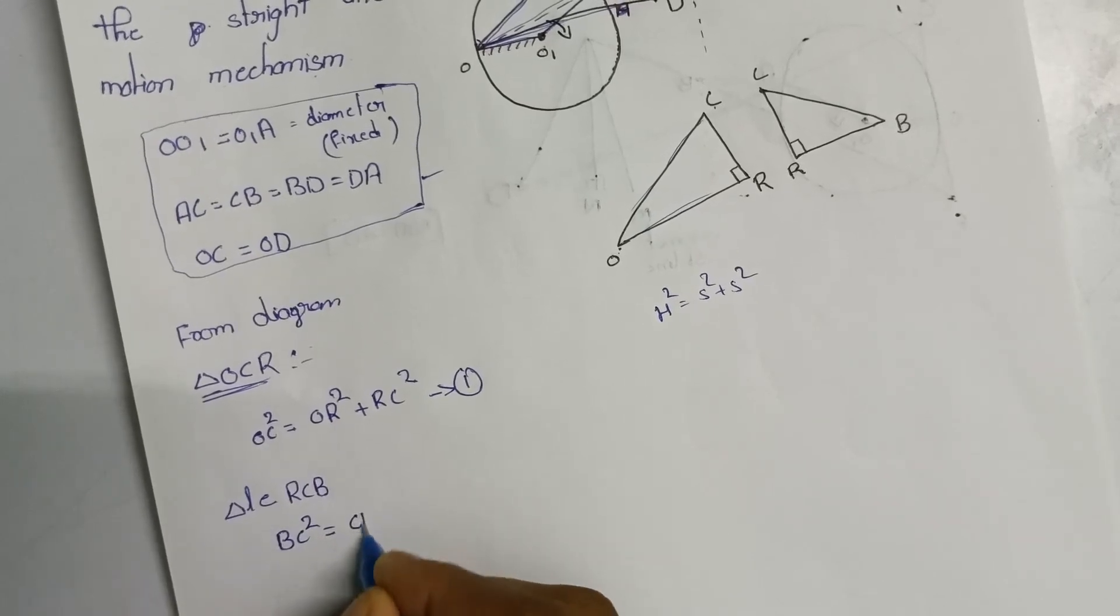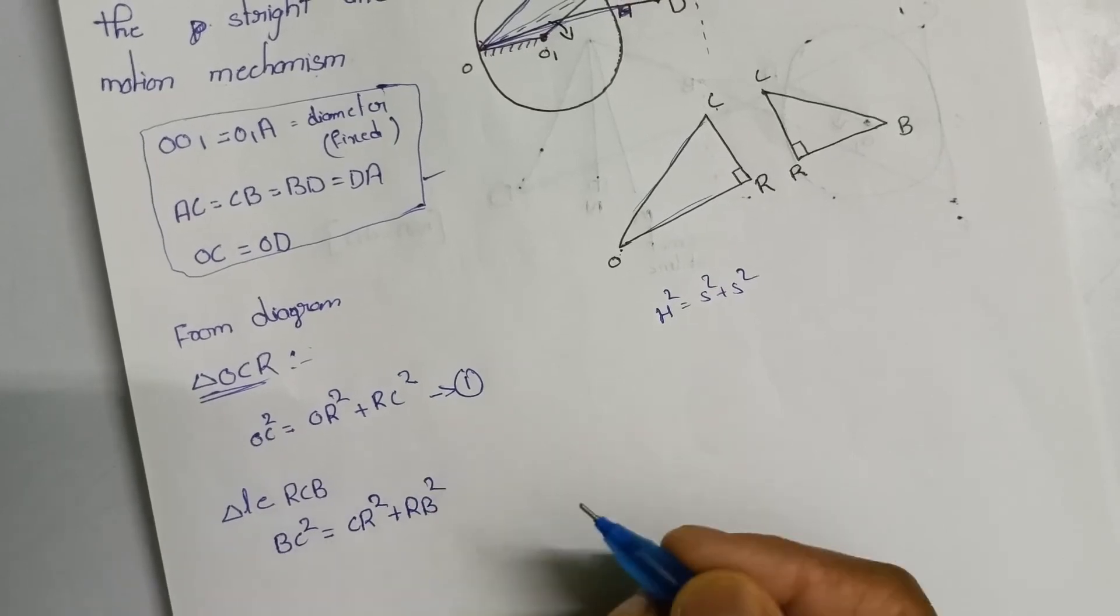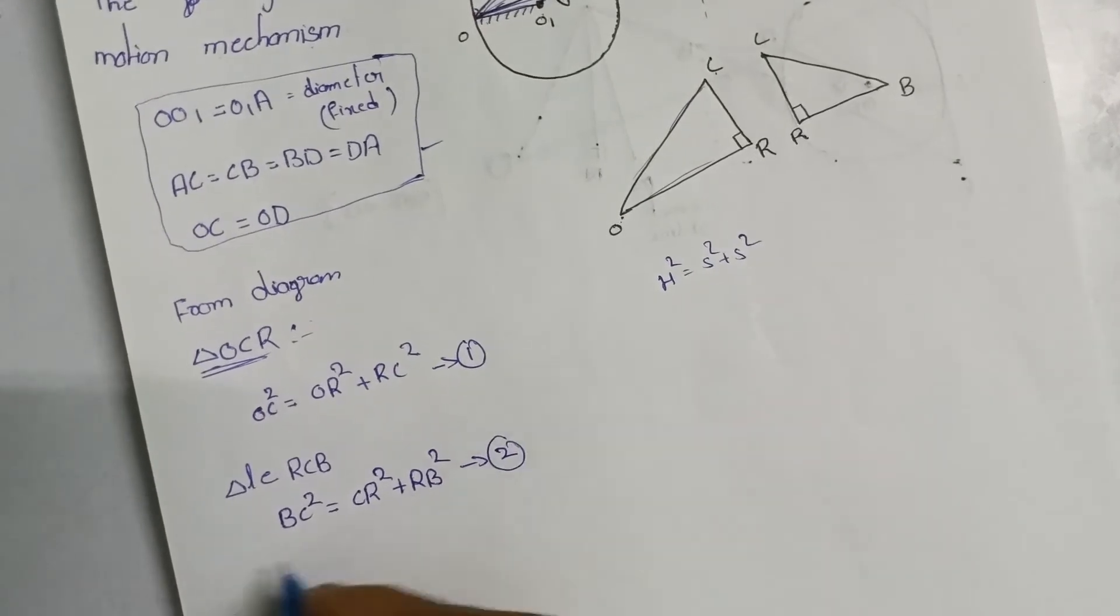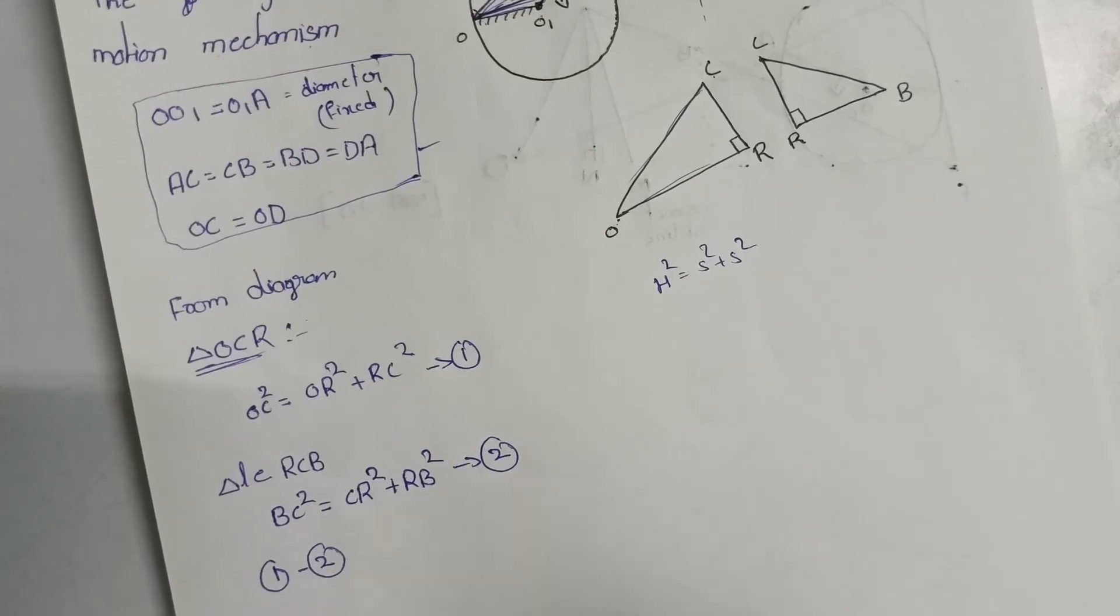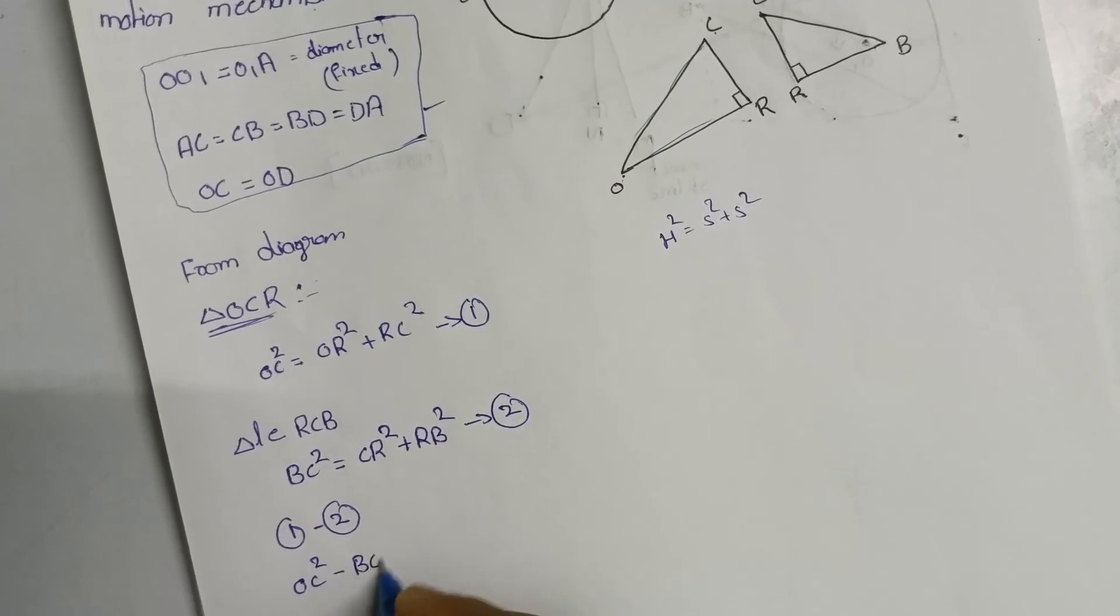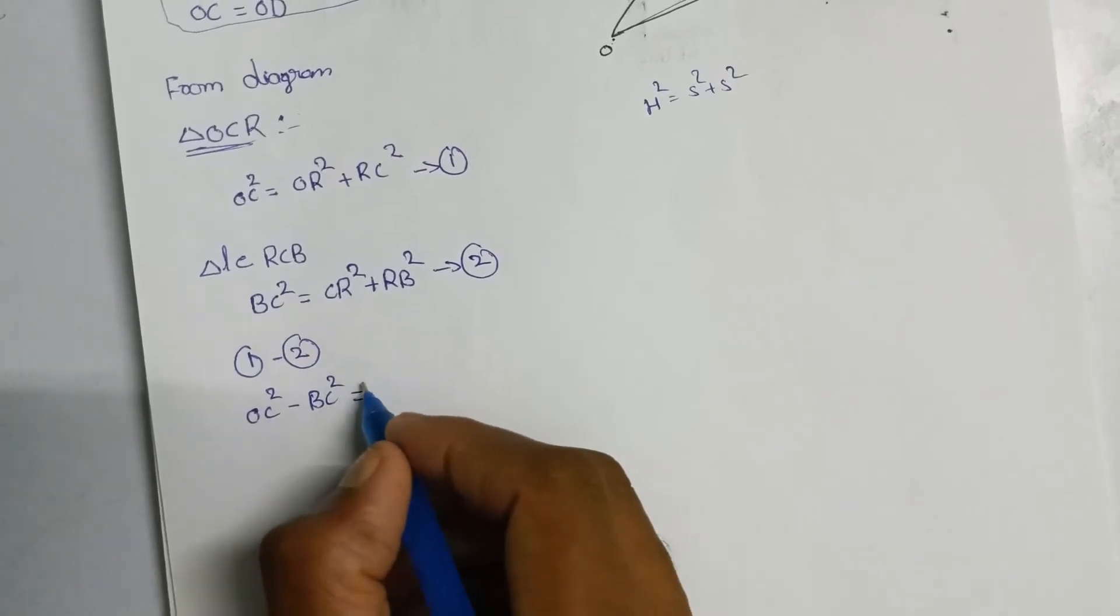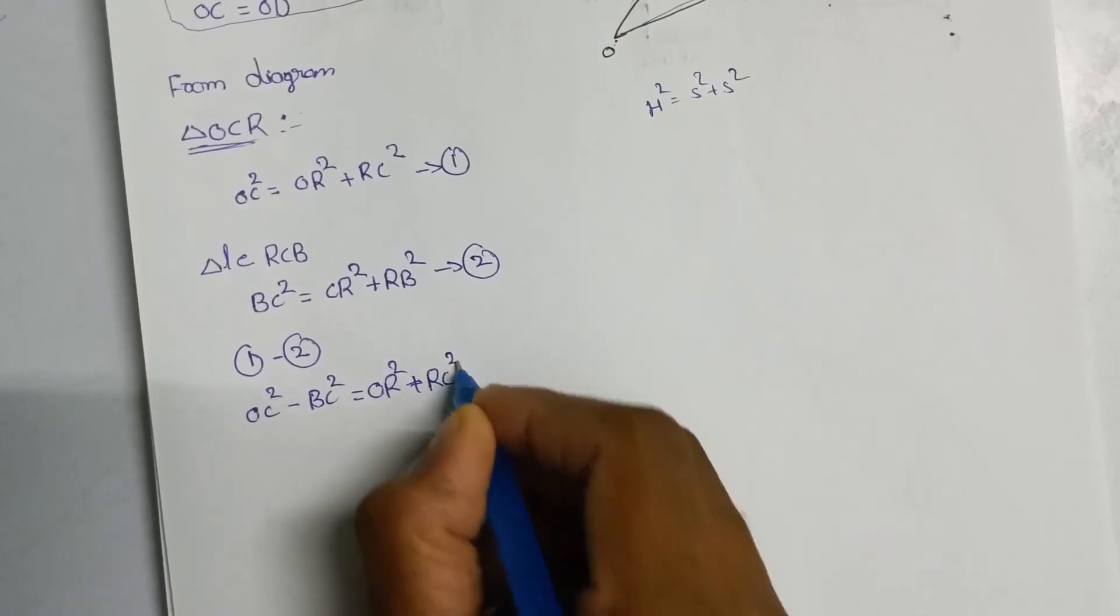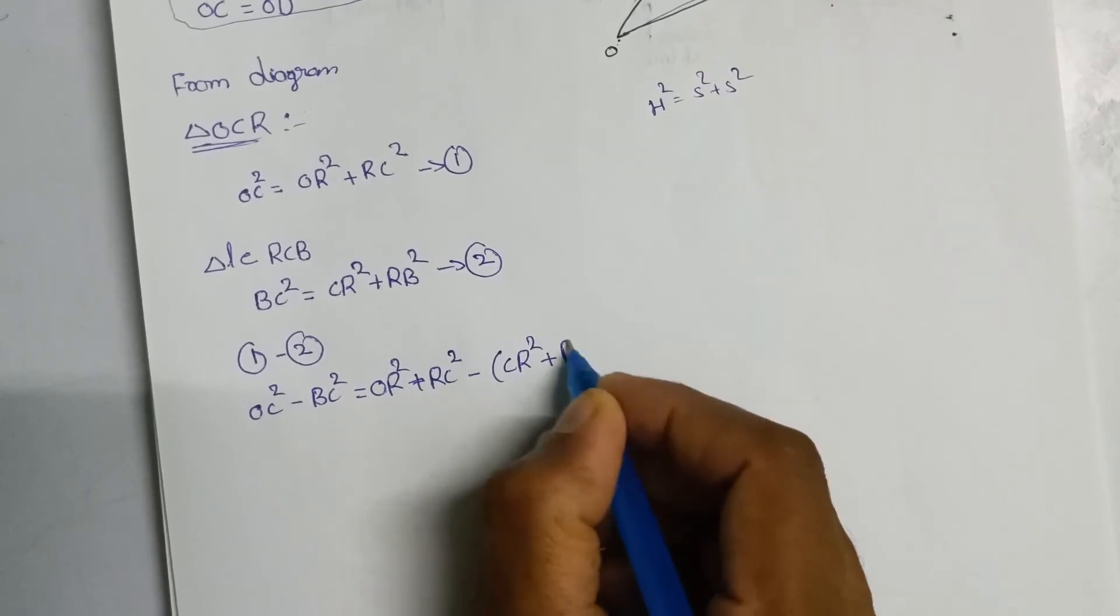Next, triangle CRB gives equation two. Now we have to subtract equation one minus equation two.